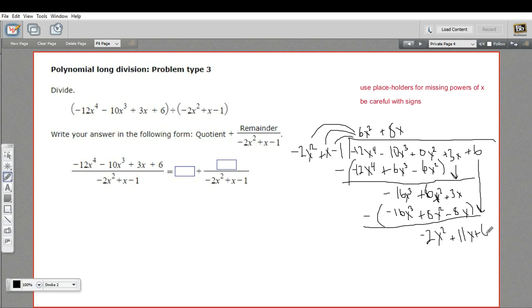So now we ask, what do we multiply negative 2x squared by to get negative 2x squared? And that's pretty easy. We multiply by 1. So we get negative 2x squared. 1 times x is x. And 1 times negative 1 is negative 1. And finally, we subtract. And what we have left over is going to be the top part of our remainder fraction. So negative 2x squared minus a negative 2x squared is 0. 11x minus x is 10x. And 6 minus a negative 1 is 7. So we have 10x plus 7 as our remainder.